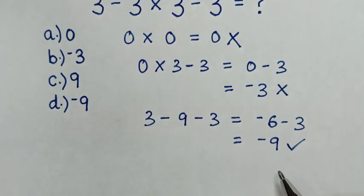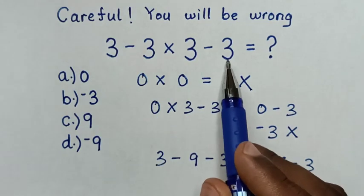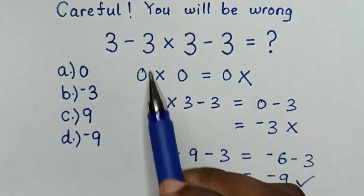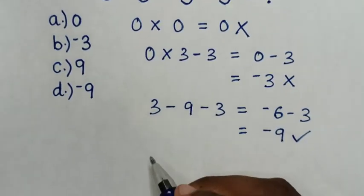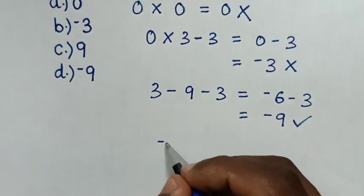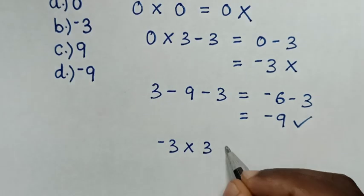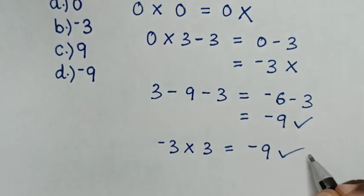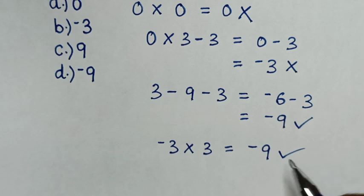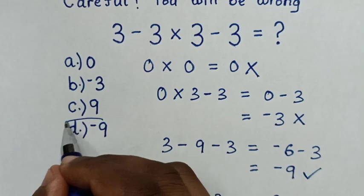Also, if you solve 3 minus 3 is 0, so it will be negative 3 times 3. So negative 3 times 3 is equal to negative 9. Also this is correct. So our answer is negative 9.